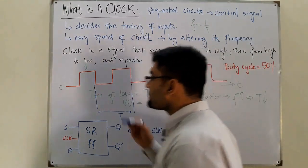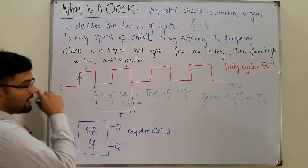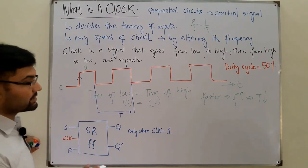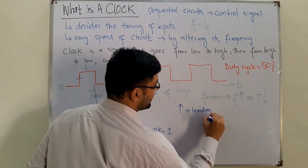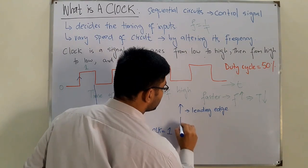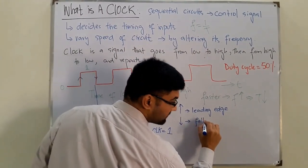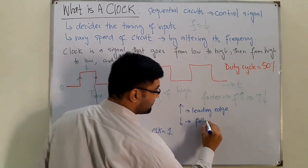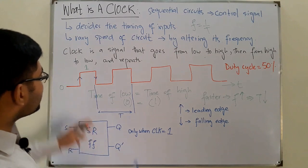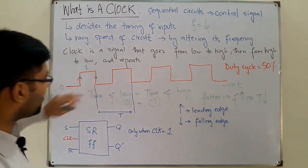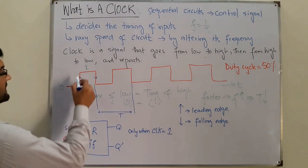Similarly, you can design other sequential circuits which operate when the clock is going from a low to high state, or from a high to low state — that is called edge triggering. When the signal goes from low to high, that is called the leading edge. When it comes from high to low, that is called the falling edge. You can design circuits to operate on either the leading edge or the falling edge.